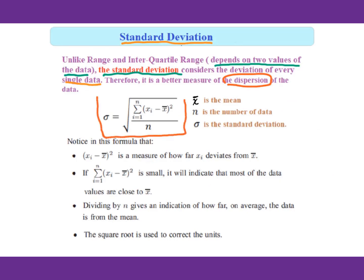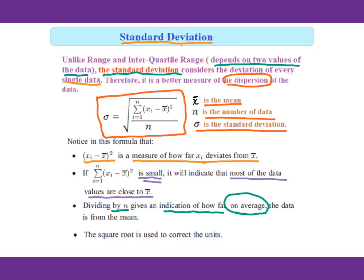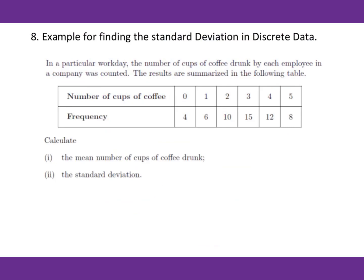This is the formula for standard deviation. x-bar is the mean, n is the number of data, sigma is the standard deviation. In the formula, xi minus x-bar squared is the measure of how far xi deviates from x-bar. If summation of xi minus x-bar squared is small, most of the data values are close to x-bar. Dividing by n gives an indication of how far, on average, the data is from the mean. The square root is used to correct the units.